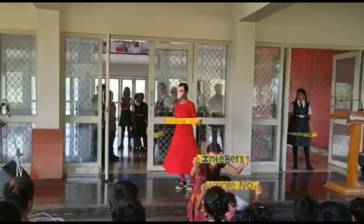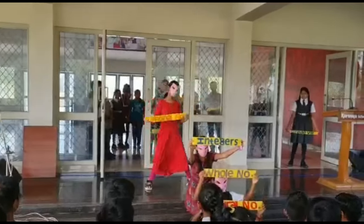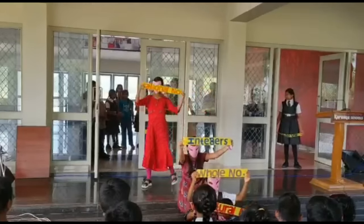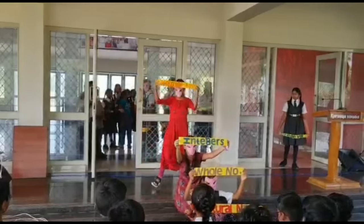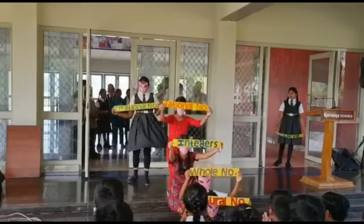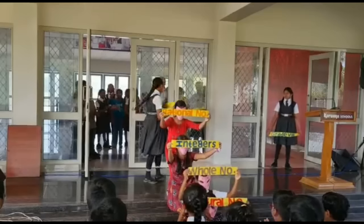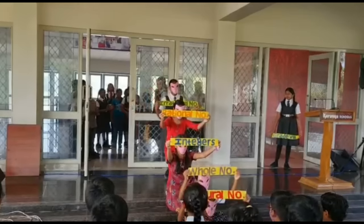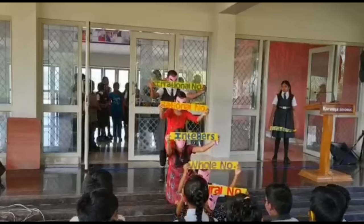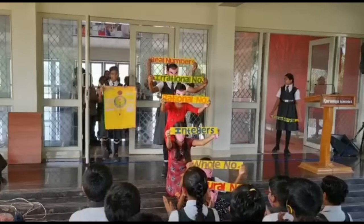If a number can be written in the form of P by Q, where P and Q are integers and Q is not equal to zero, it is called a rational number. If a number cannot be written in that form, it is called an irrational number. All these numbers are real numbers.